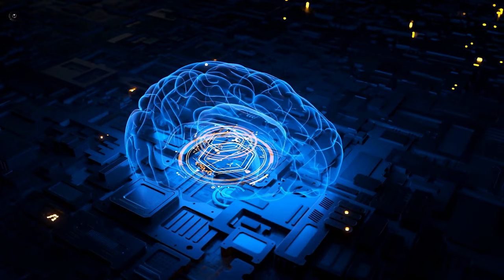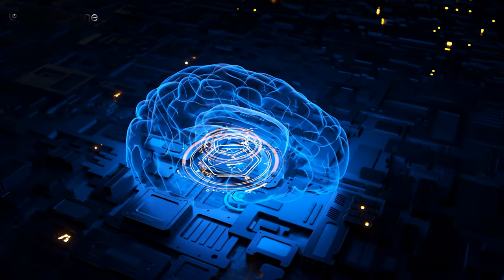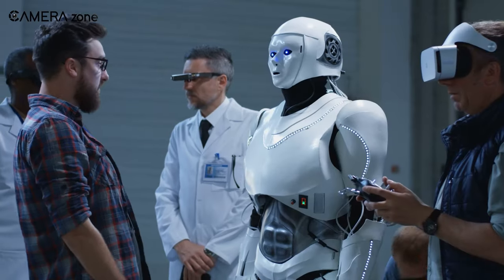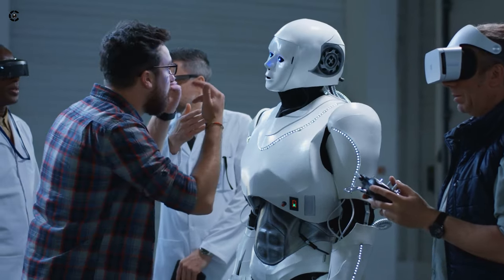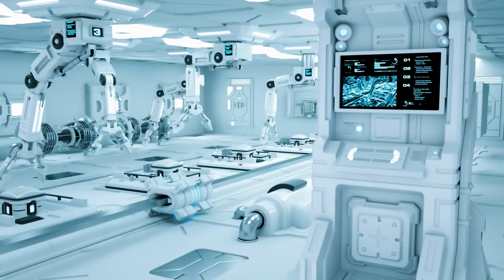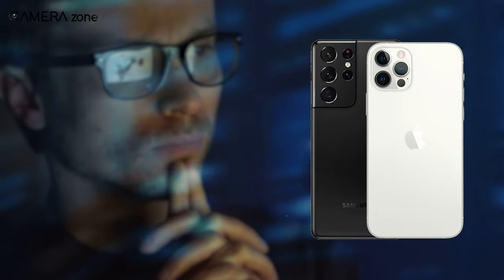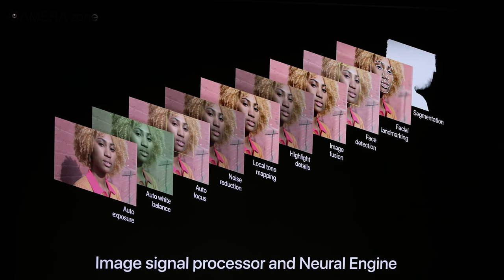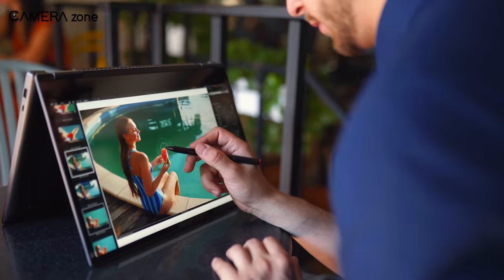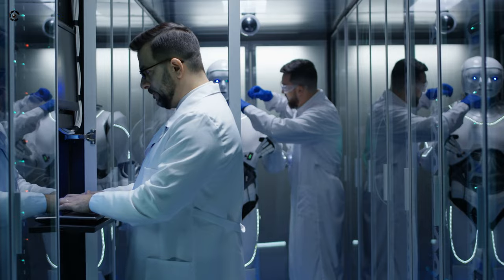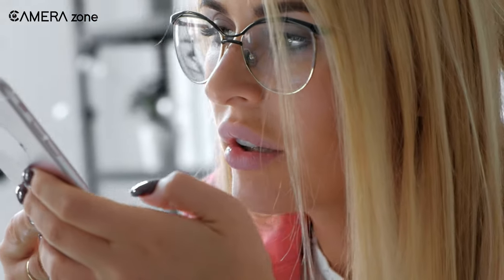In computer science, artificial intelligence is concerned with the idea of making a computer capable of thinking, or at least learning. This part of technology tries to imitate the behavior of a human, such as speech, face and voice recognition, machine learning, and more. AI is used in computational photography, voice activation, easy photo editing, and much more.